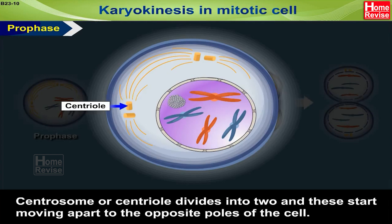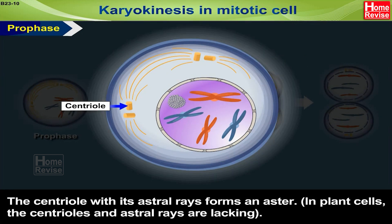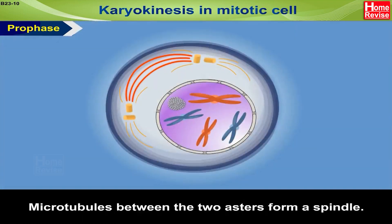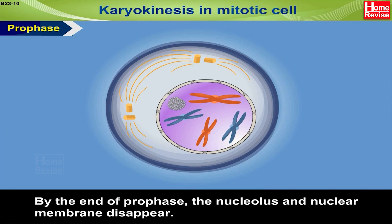The centrosome, or centriole, divides into two and these start moving apart to the opposite poles of the cell. Fine microtubules, called astral rays, radiate out from each daughter centriole. The centriole with its astral rays forms an aster. In plant cells, the centrioles and astral rays are lacking. Microtubules between the two asters form a spindle. The equator of the spindle lies at the centre of the cell. By the end of prophase, the nucleolus and nuclear membrane disappear.